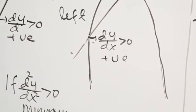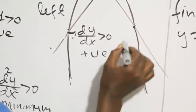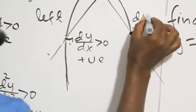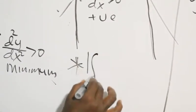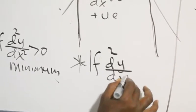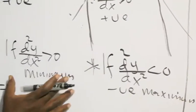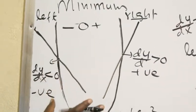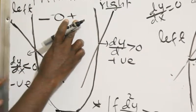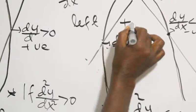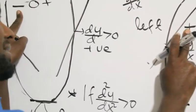If the derivative is negative to the left, and then positive to the right, that confirms a minimum. If the second derivative is less than zero, that means maximum — no minimum here. Going from positive to zero to negative means we have a maximum value.